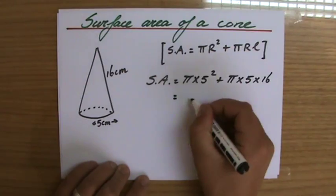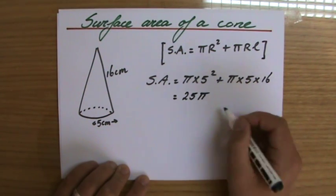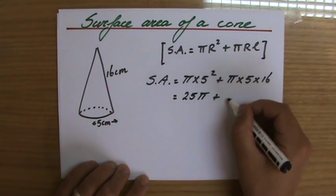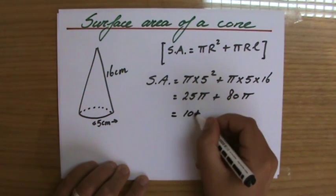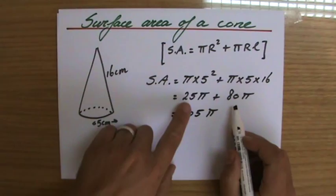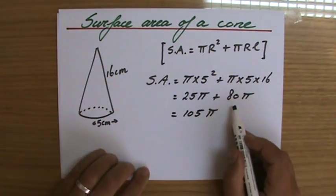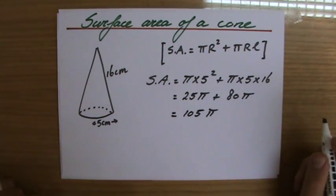All right, so that is 25 pi plus 80 pi. So that will be 105 pi. These are like terms, 25 pi, another 80 pi, 105 pi's.